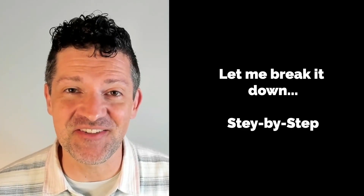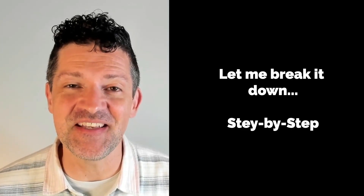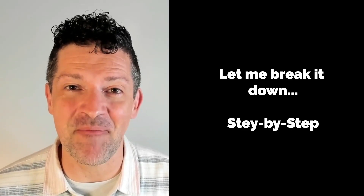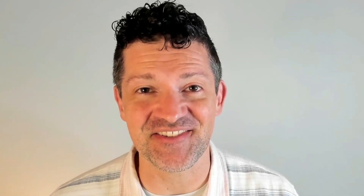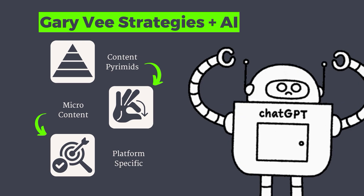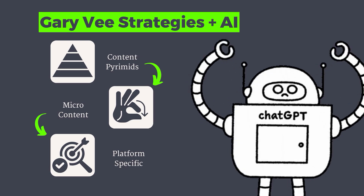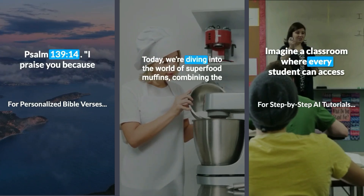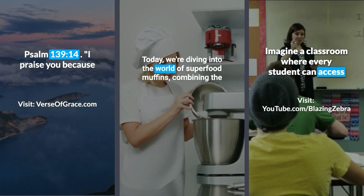But what exactly is the best way to do that? In this video I'm going to break it down for you step by step. By the end of this video you're going to know how to build an AI assistant that is an expert in social media trained on Gary Vee's methods and strategies. This assistant will deeply understand Gary's approach to creating content pyramids, micro content, and adjusting content to specific platforms, and a whole lot more, including automatically creating short form videos like these.